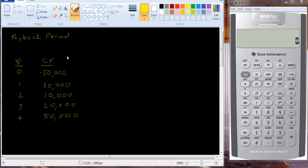So it's easy by looking at an example here. In this case, we have a project that costs $50,000. That's why we have a negative cash flow in year zero. In year one, it returns $30,000. In year two, it returns $10,000. Year three, $20,000. And year four, $50,000.